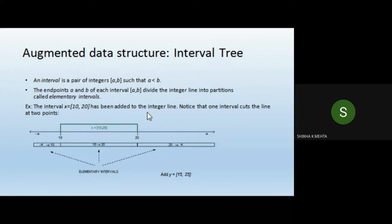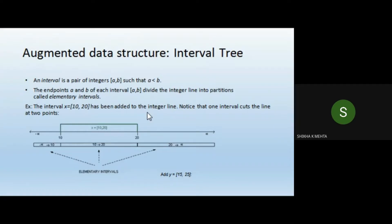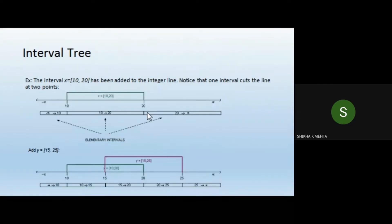An interval refers to a range — a pair of integers a and b such that a is less than b. Here a represents the lower value and b the higher value. For example, an interval of 10 to 20 means we focus on that range. When we specify one range, it cuts the number line at two points: the minimum and the maximum point.